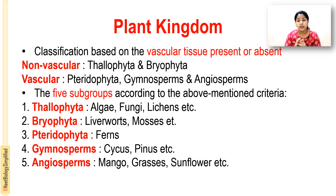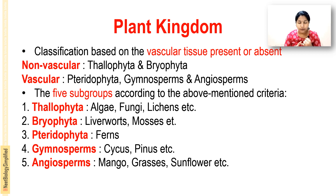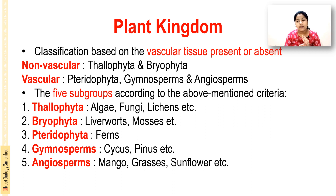Classification based on vascular tissue: the non-vascular group includes thallophyta and bryophyta, while the vascular group includes pteridophyta, gymnosperms, and angiosperms. Pteridophytes and phanerogams have a well-defined vascular system. The five subgroups according to these criteria are: thallophyta, bryophyta, pteridophyta, gymnosperms, and angiosperms.